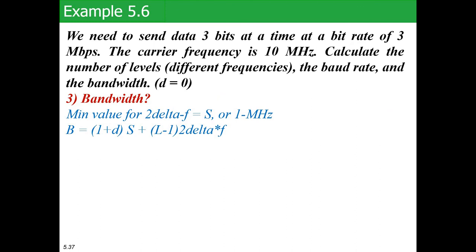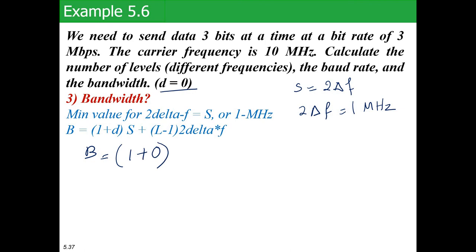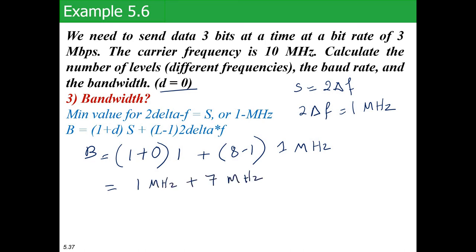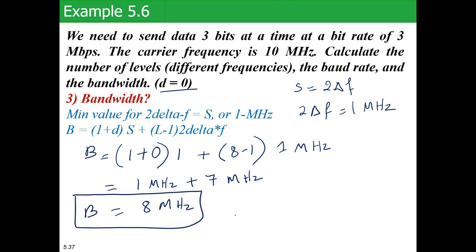Now to find the bandwidth. We know that 2 delta f should be at least equal to s, so 2 delta f equals 1 megahertz. Substituting into the bandwidth formula with d equals 0: B equals (1 + 0) × 1 megabaud + (8 − 1) × 1 megahertz, which equals 1 megahertz + 7 megahertz equals 8 megahertz. Bandwidth equals 8 megahertz; this is your third answer.